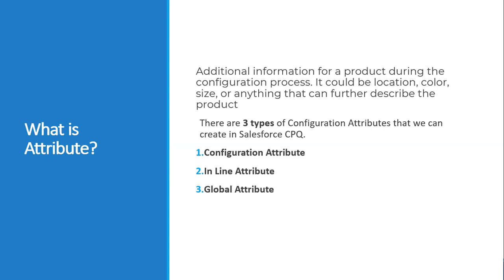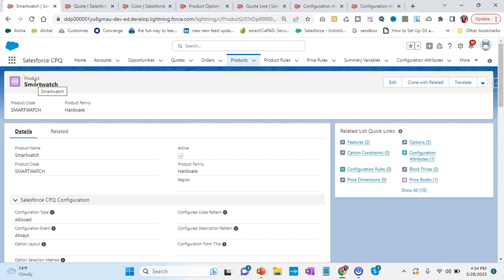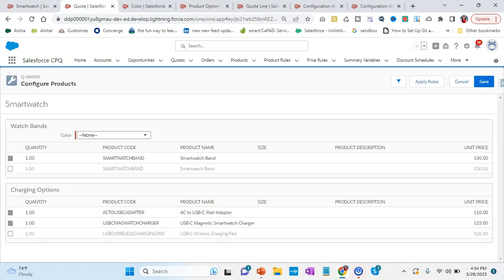That is an attribute — the additional features which can be selected to give more enhanced information about the product we want to order. When talking about attributes, there are three types: configuration attribute, inline attribute, and global attribute. We will discuss each one by one. Let's talk about configuration — I am on the product Smartwatch.